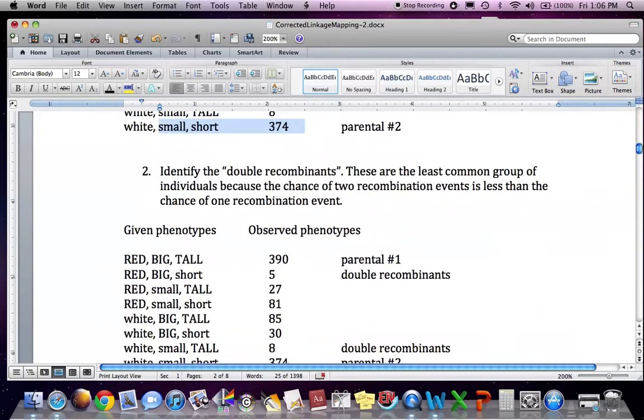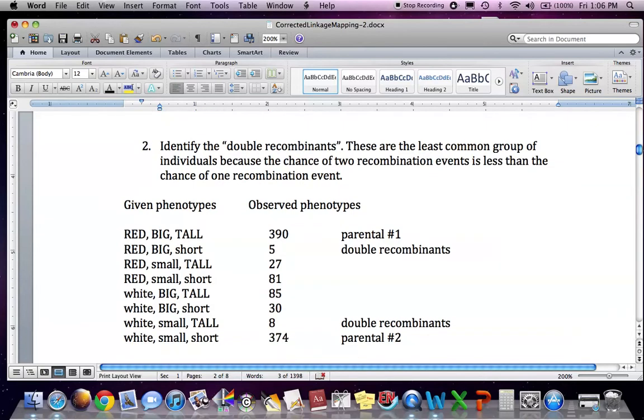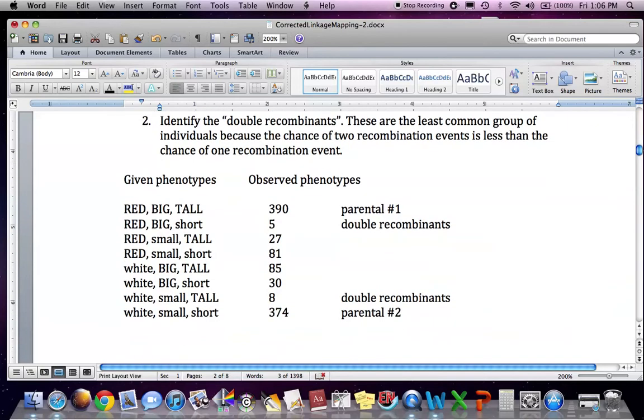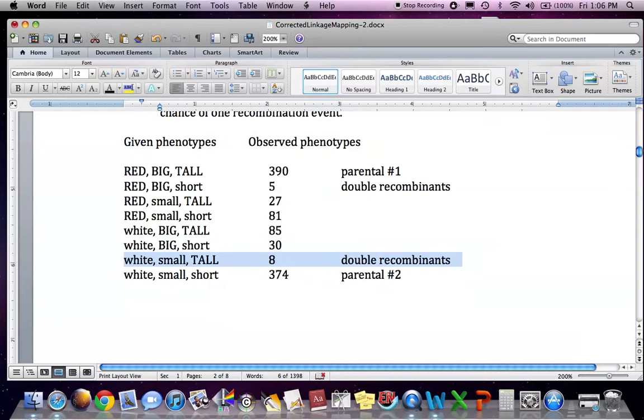Then you want to identify the double recombinants. These are the least common group of individuals because the chance of two recombination events is less than the chance of one recombination event. So we have these guys there and then these guys there. It's because that's only five out of, you know, it's the lowest number, five and eight.